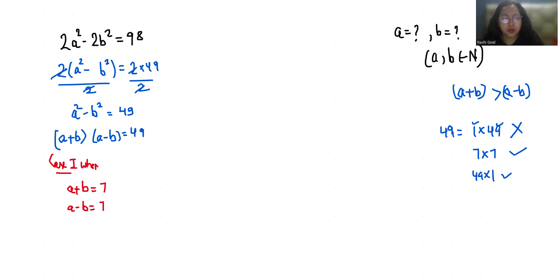Now let's add both equations. So 2a equals 14, which simplifies to a equals 7.